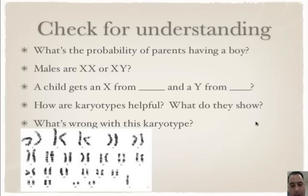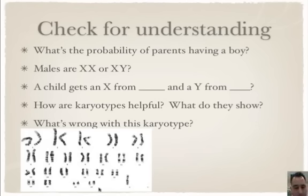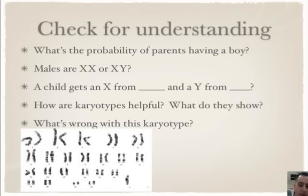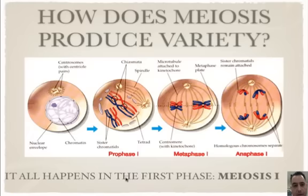How are karyotypes helpful? They show the sex and the health of your child. Looking at another example, everything looks fine — pairs, pairs, pairs — but there's only one X. There should be two sex chromosomes, either XX or XY, and there's just one X, so it has only 45 chromosomes. That's also called Turner syndrome.